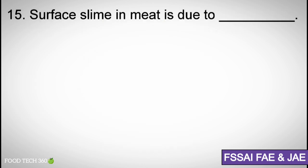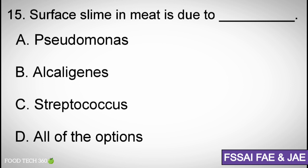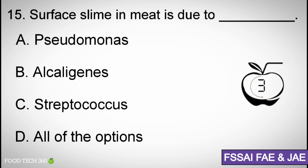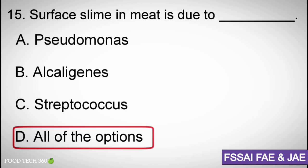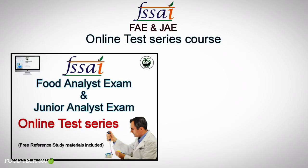Question number 15. Surface slime in meat is due to: A. Pseudomonas, B. Alcaligenes, C. Streptococcus, D. All of the options. Correct answer: D. All of the options.